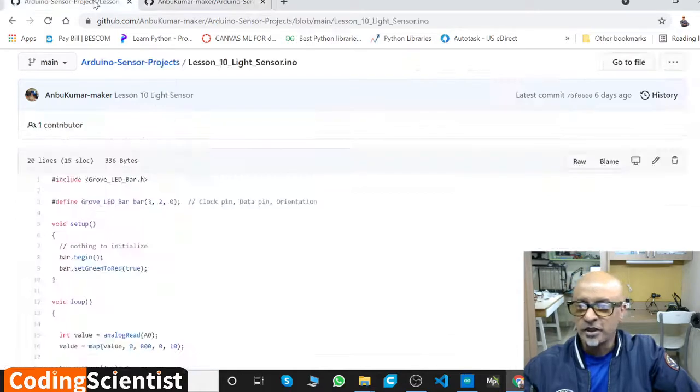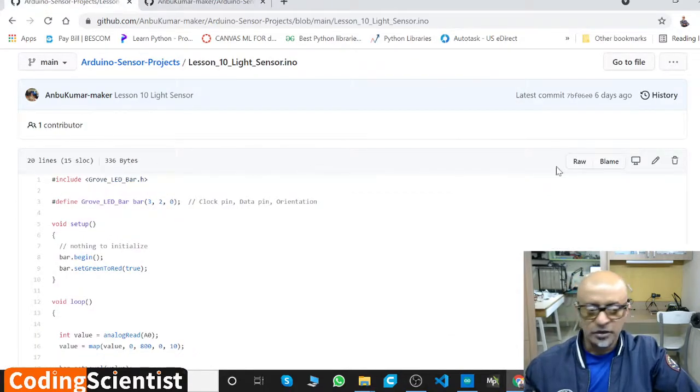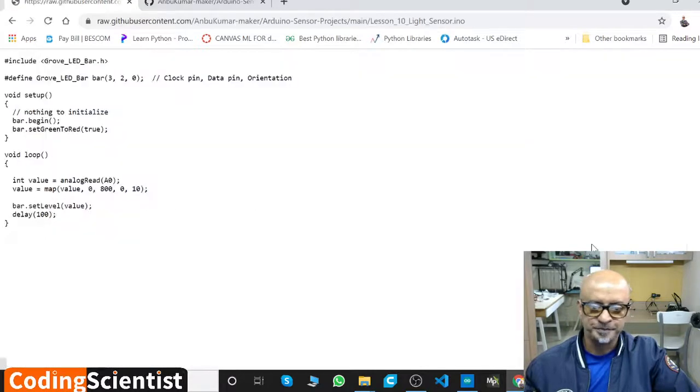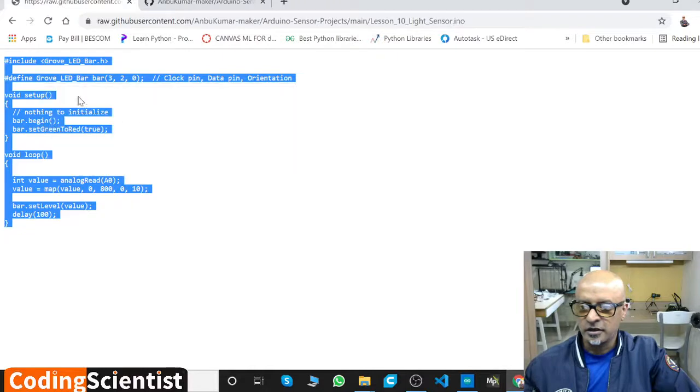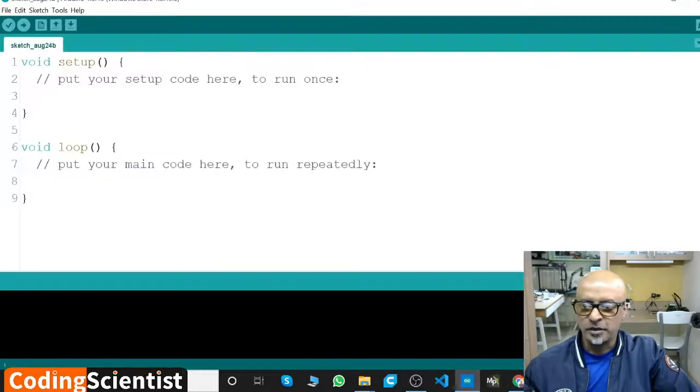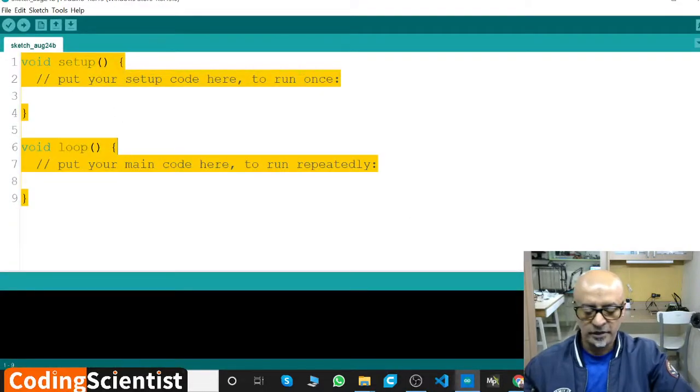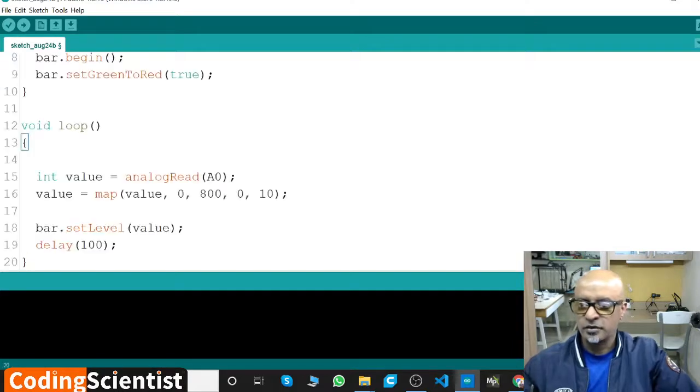Inside that Libraries folder, you can put this particular zip so your library gets installed. Now go ahead, let's go to Raw, and then Ctrl+A, Copy. Open the IDE and then Ctrl+V.